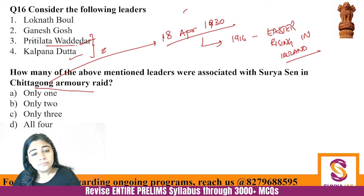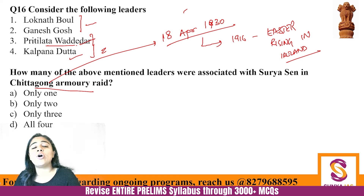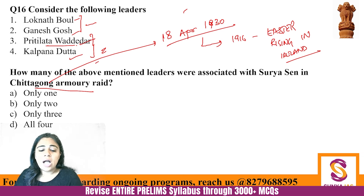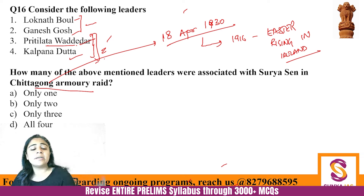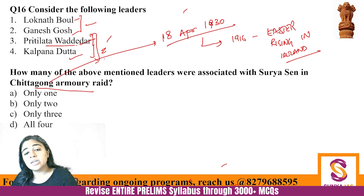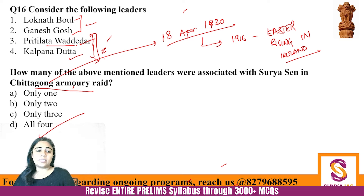Other participants in the Chittagong Armory Raid include Lokanath Bal, Ganesh Ghosh, Ambika Chakrabarti, Hari Kopal Bal, Anand Singh, and Anand Prakash Gupta. Bhagat Singh, Chandrashekhar Azad, Rajguru, and Sukhdev were NOT involved — this was a separate Bengal-based activity. UPSC might ask whether Bhagat Singh was involved — the answer is no. All four statements in this question are correct. Preeti Lata Wadeddar and Kalpana Dutt are particularly important names to remember.